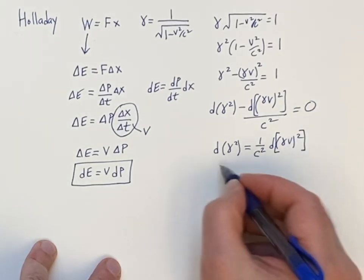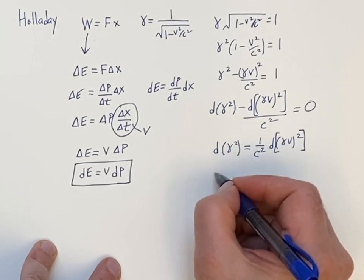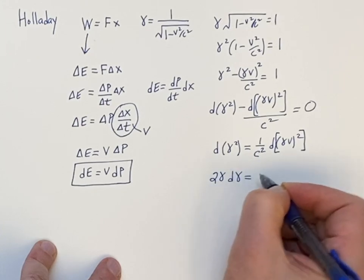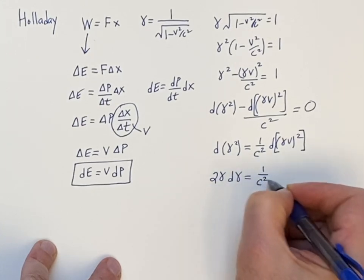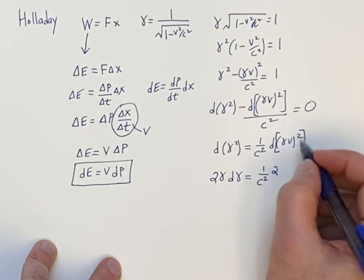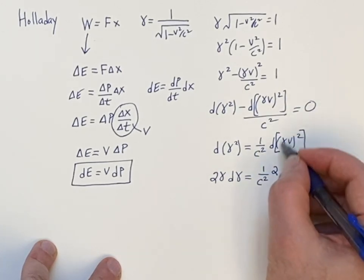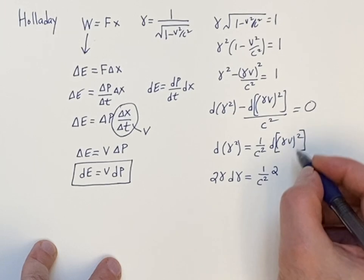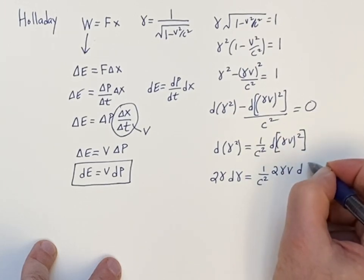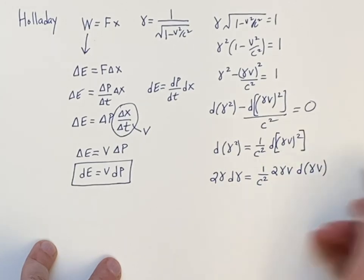Now, using the laws of calculus, we would have 2 gamma d gamma. And over here, 1 over C squared, we bring the 2 down. And like the chain rule kind of idea, the derivative of what's inside. So this is 2 gamma V, and then you would have d gamma V.